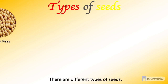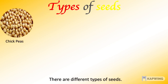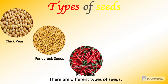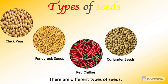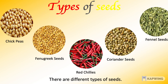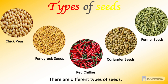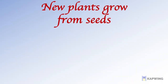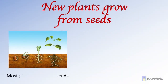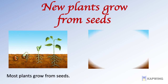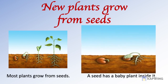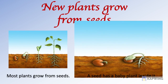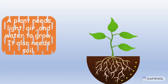There are different types of seeds. For example, chickpeas, fenugreek seeds, red chillies, coriander seeds, fennel seeds, etc. New plants grow from seeds. Most plants grow from seeds, and a seed has a baby plant inside it.